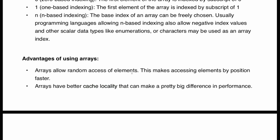Array allows random access of elements. This makes accessing elements by position faster. Get it? Means in other data structures this may be a little bit more difficult but in array this is so easy. Arrays have better cache locality that can make a pretty big difference in performance. This is also good.